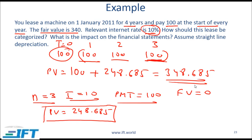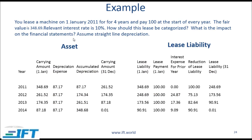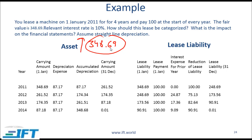This present value is actually higher than the fair value of 340, so clearly this is a finance lease — you cannot treat this like an operating lease. Now let's look at what you show on the balance sheet and on the other financial statements. The initial value is 348.69. What do we do on the asset side?